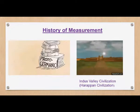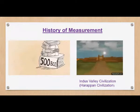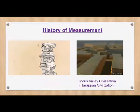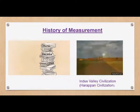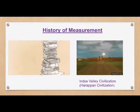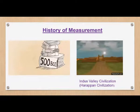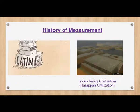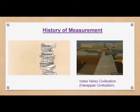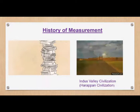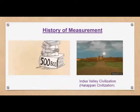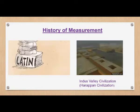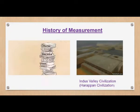In the beginning of human civilization, the names of many units of measurement were borrowed from human morphology. For example, the foot, the hand, the base, the cubit, etc., were being used by the people for measurement.